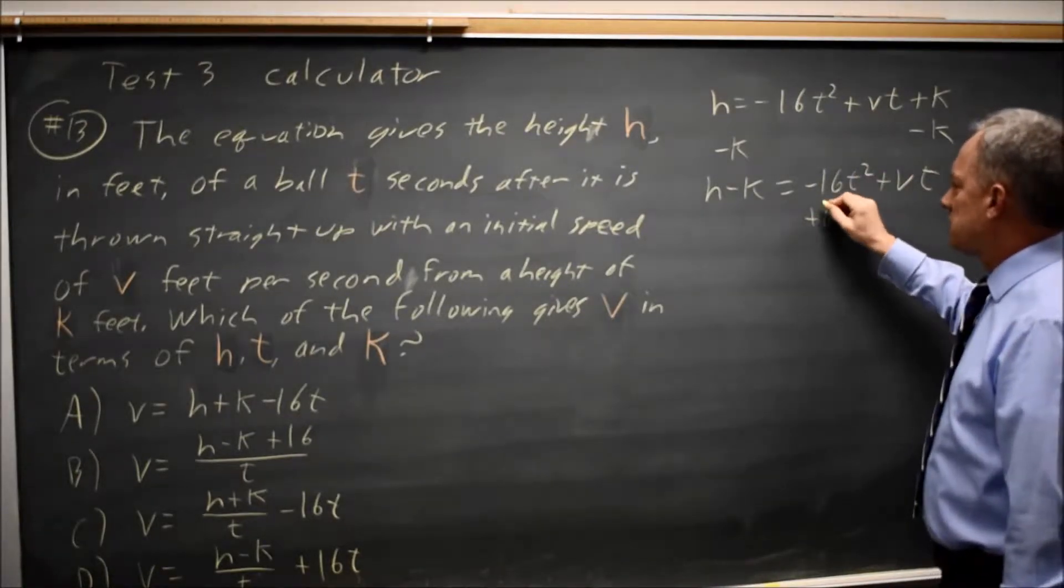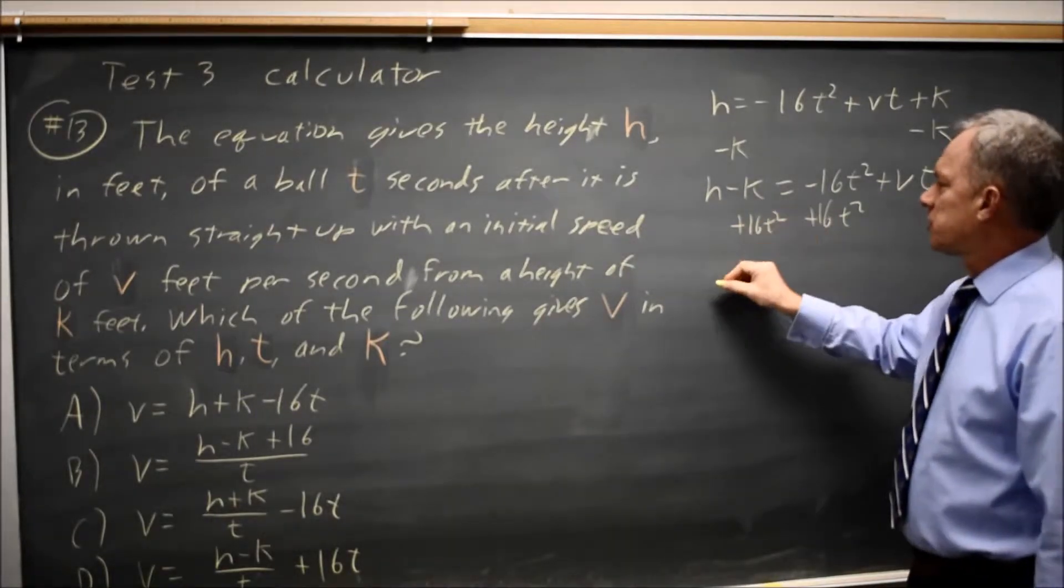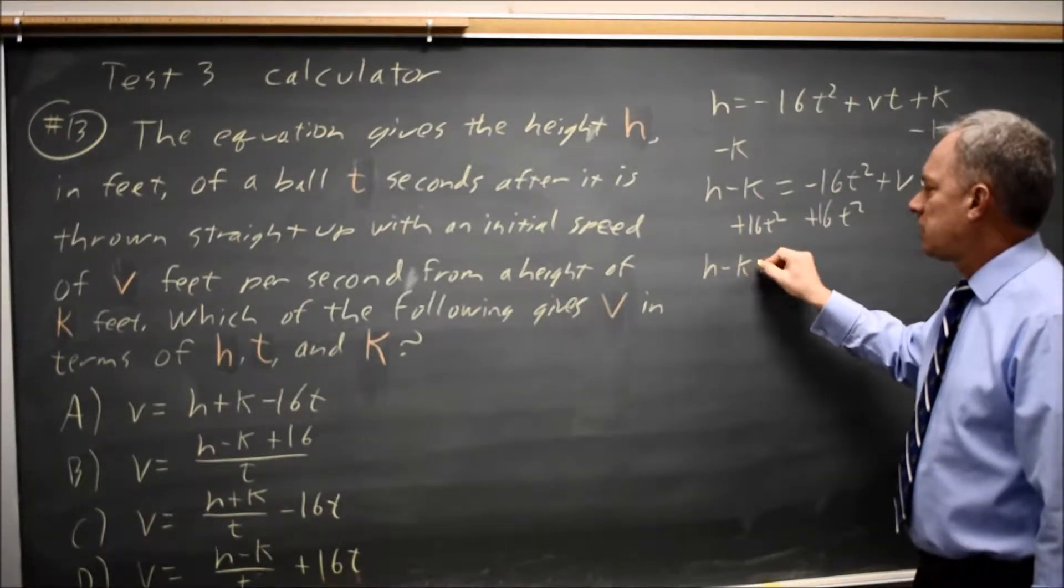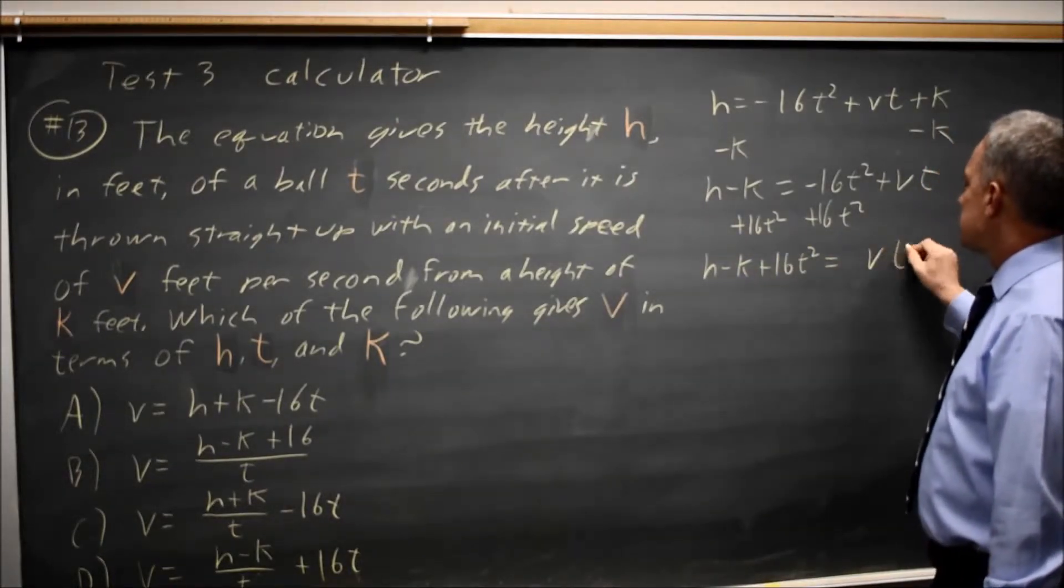Now if I add 16t squared to both sides, that gives me h minus k plus 16t squared equals v times t.